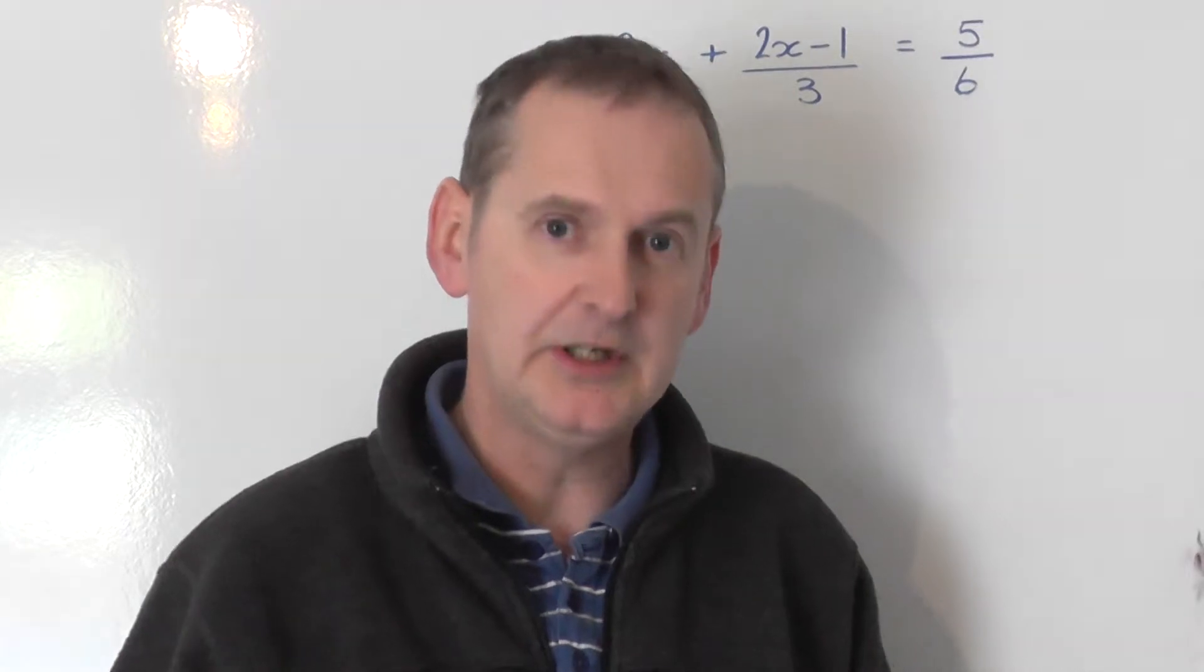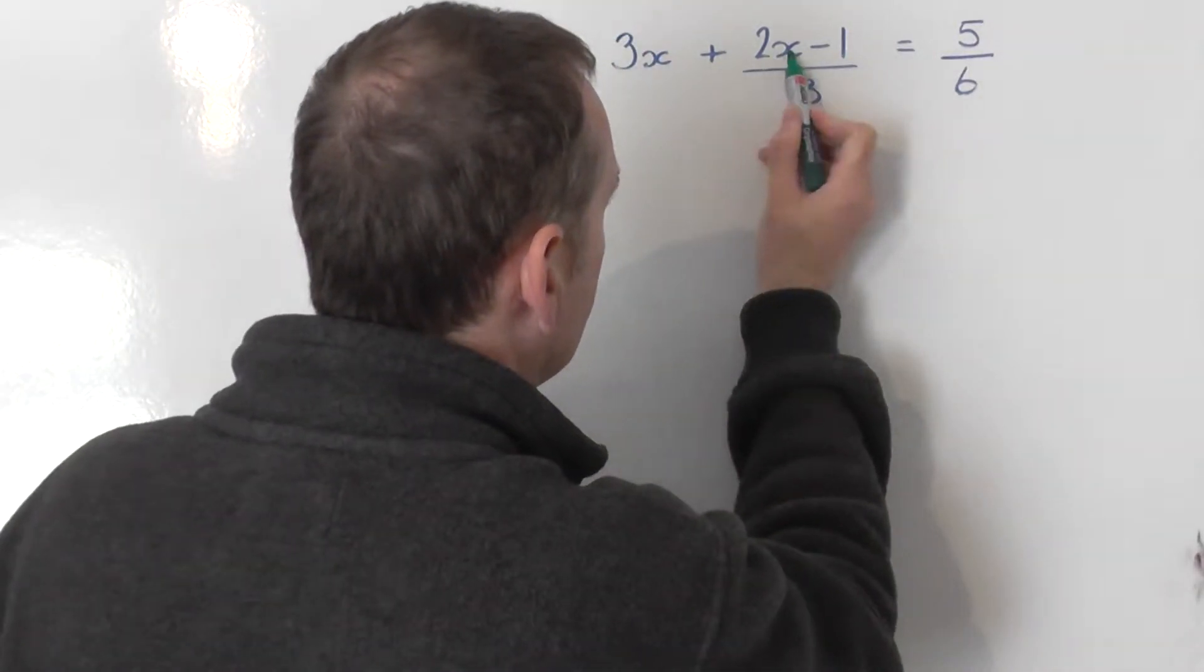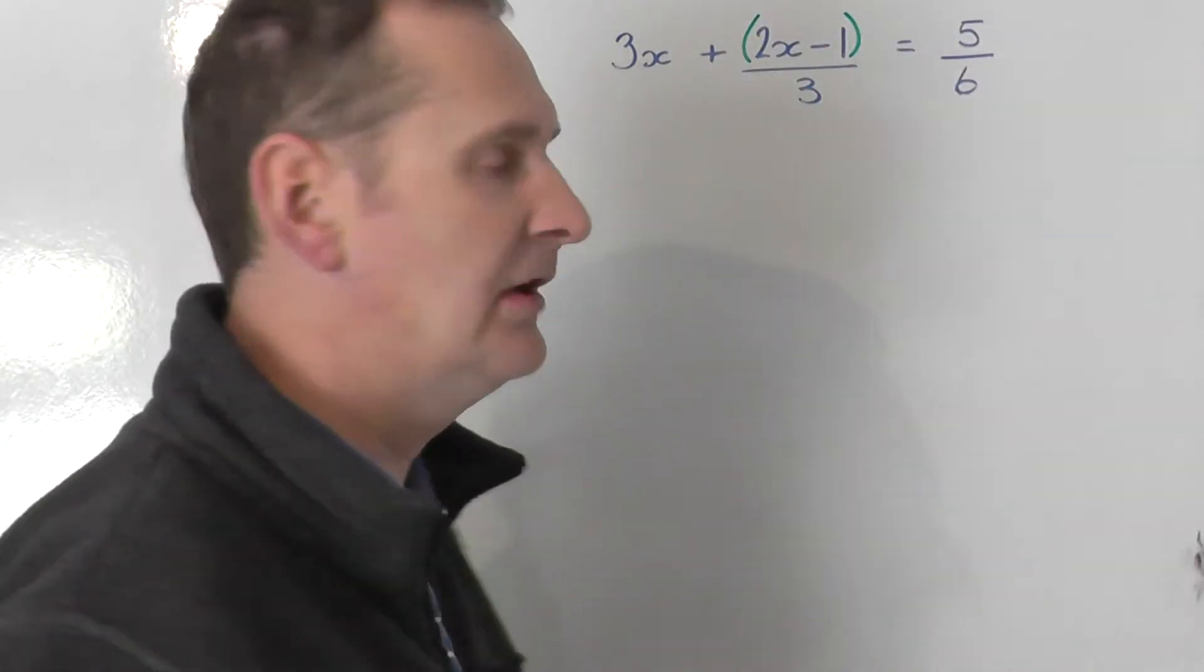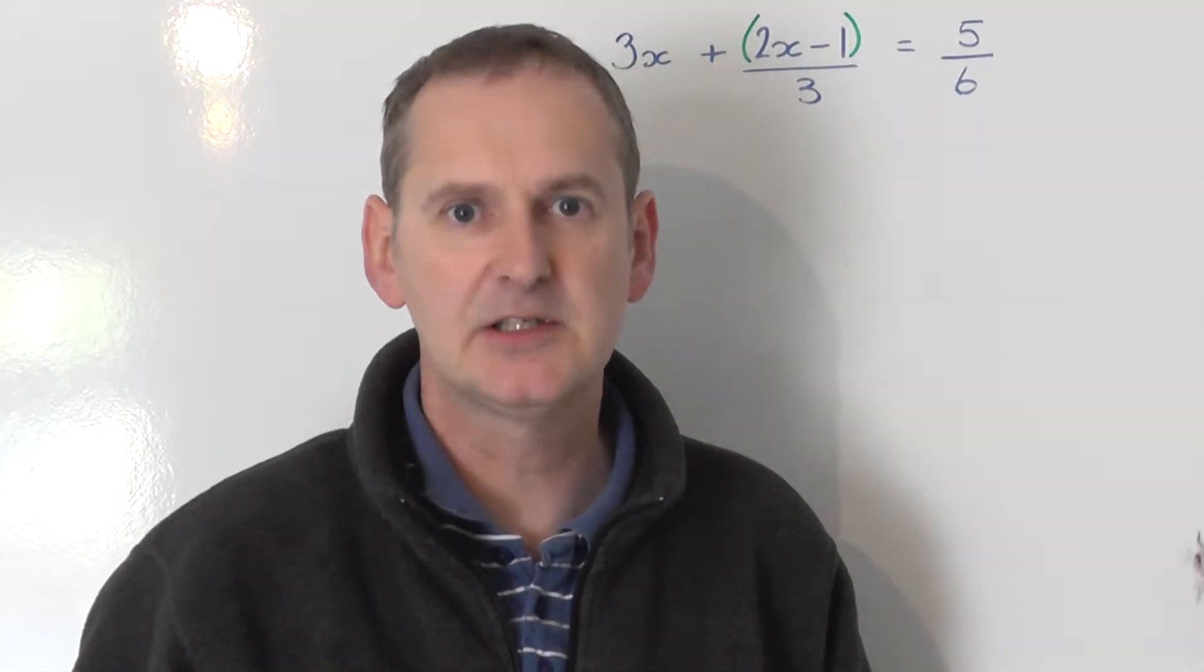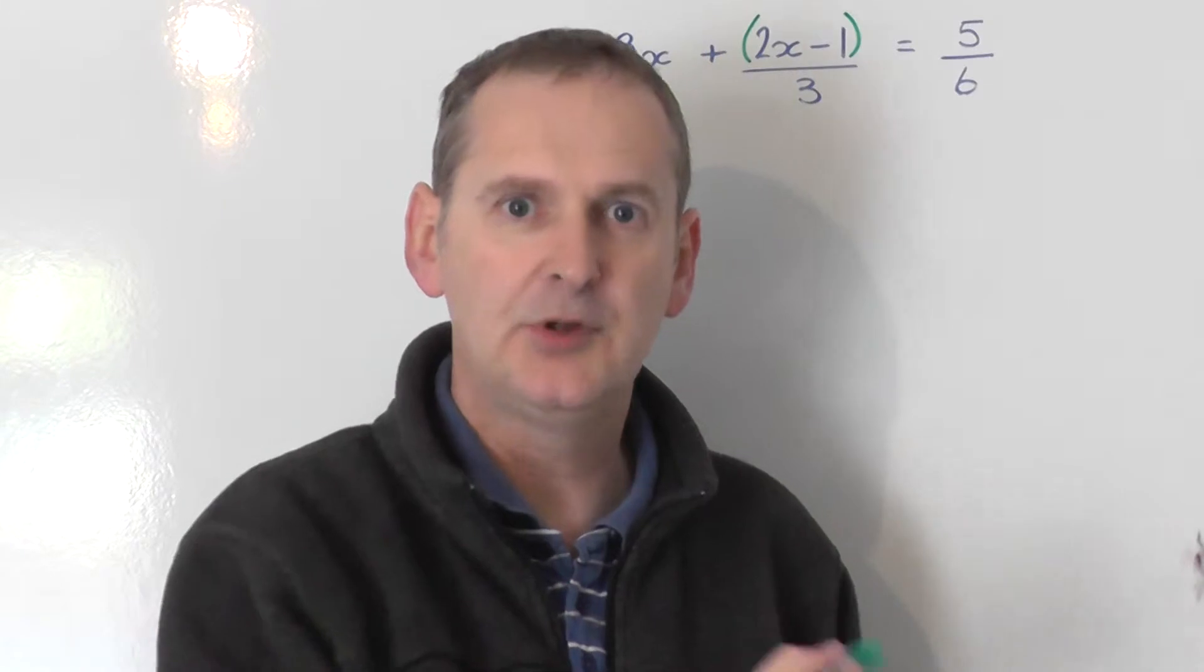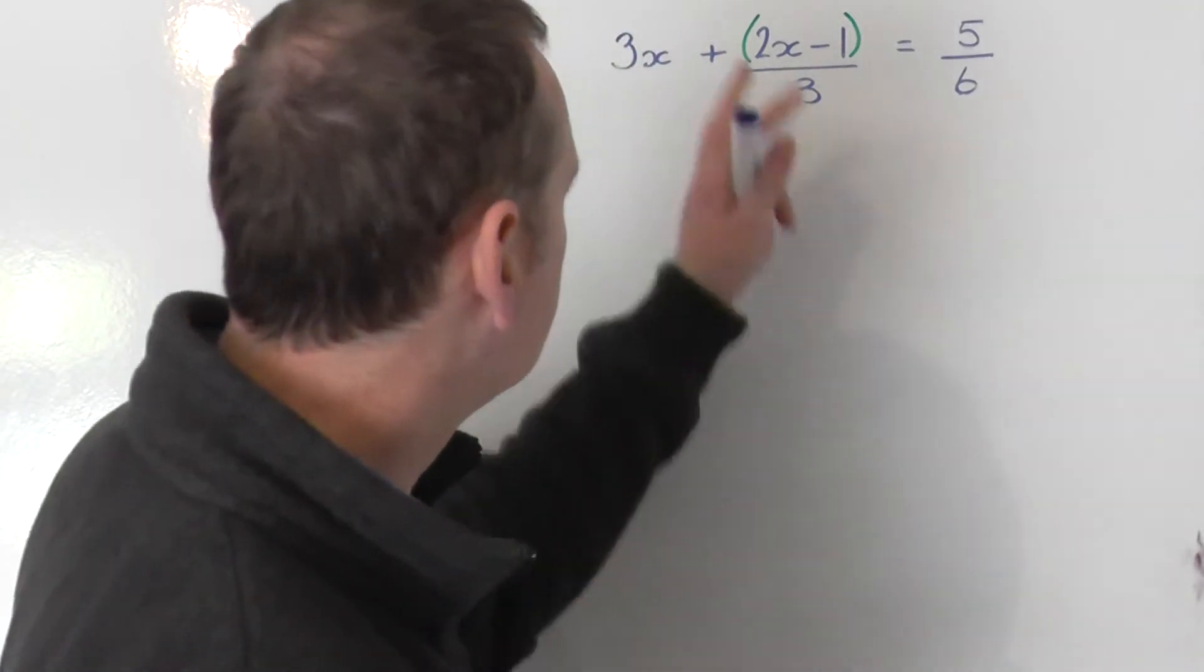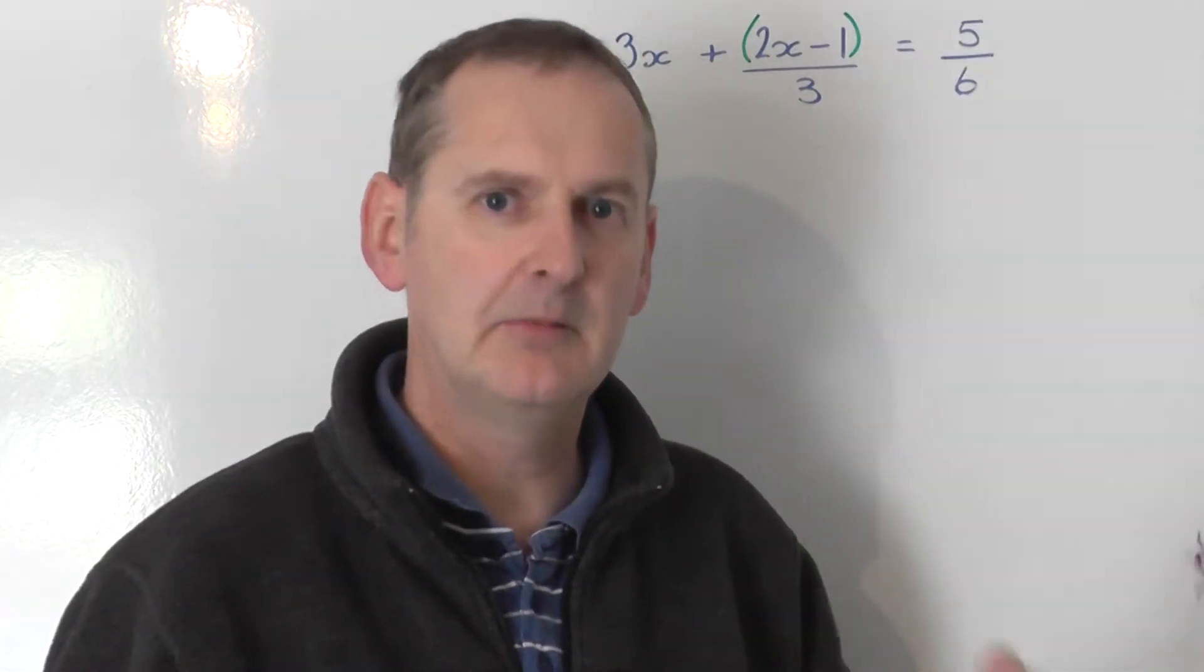The way we should be dealing with this is to get a color out. This term here is 2x minus 1 all divided by 3. For this type of question you're going to find it far easier to put all 2x minus 1 inside a bracket. So I'll get a color out and put that in. On occasions they may already show you the bracket in the question, but quite often in these they don't, so get a color out and put it in.